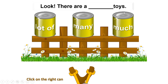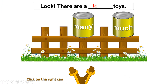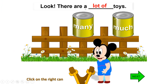Next: Look, there are ___ toys. You see the word here, so you have to choose 'a lot of.' A lot of — they go together. Listen and repeat: Look, there are a lot of toys.